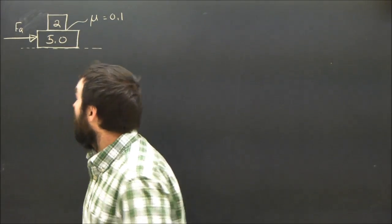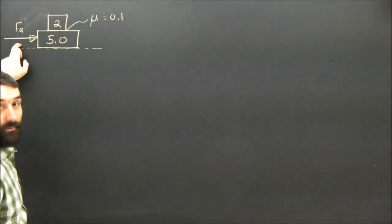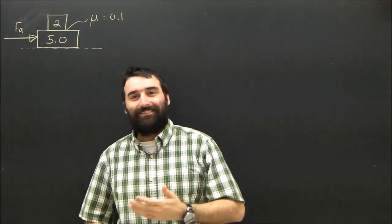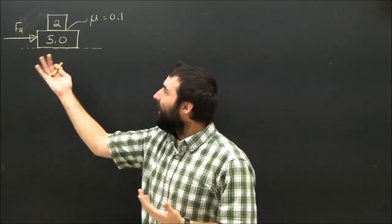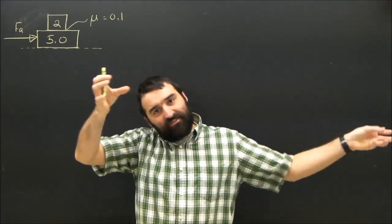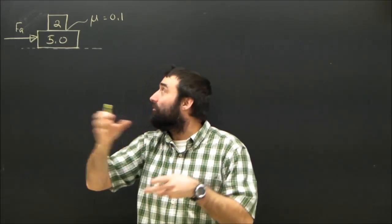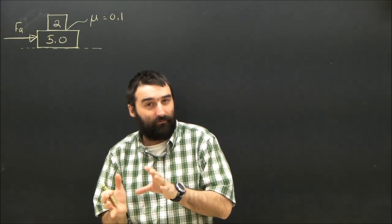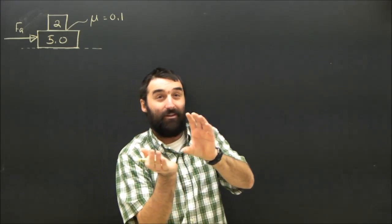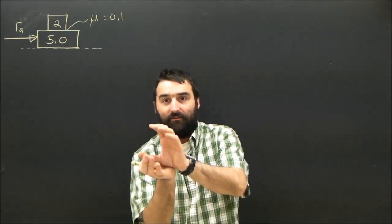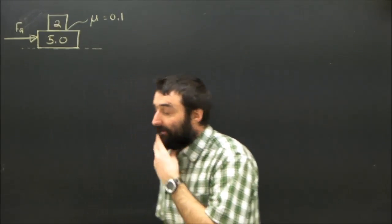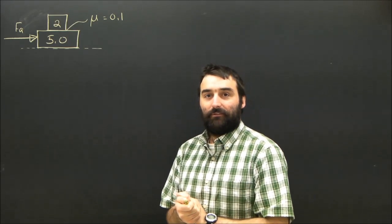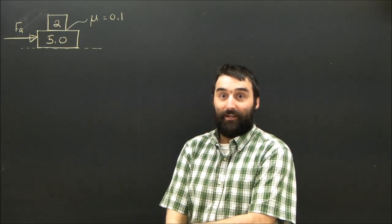The question is, what is the maximum force we can apply to the bottom block such that the top block doesn't slip? If we push hard enough, the 5 is going to slide right out from underneath the 2, and the 2 is going to appear to slide backwards off the 5. It's not really going to slide backwards, it's going to slide forward, but not as quickly as the 5, so it will come off the back. How do we figure out what that maximum force is that we can apply, other than just guessing and checking?